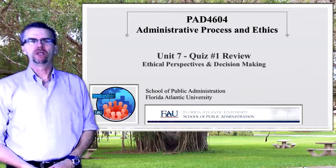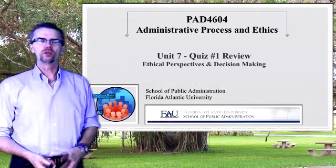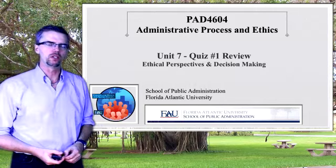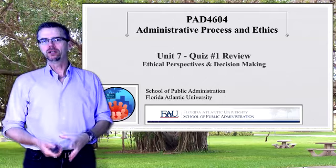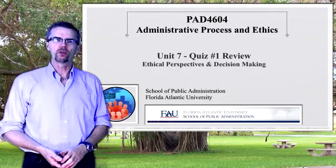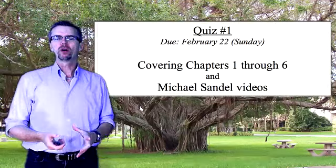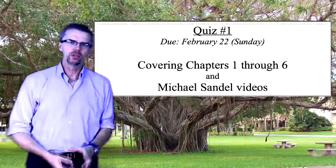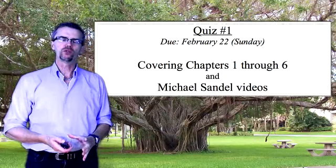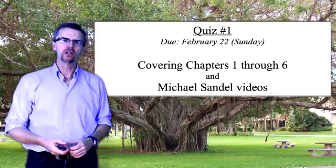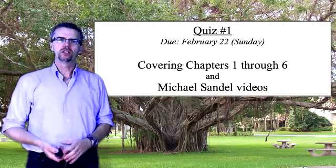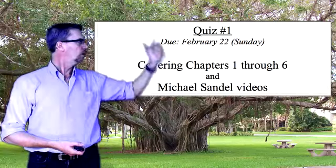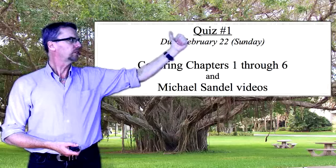Welcome to Unit 7 for the PAD 4604 class. This unit is primarily a review of chapters 1 through 6 of the Johnson Textbook, compiled as a review for Quiz No. 1. In this video, I'm going to review all eight of the questions for the quiz and show you where the answers can be found in the textbook, as well as in the PowerPoint presentations. The quiz is due February 22nd, Sunday at midnight.